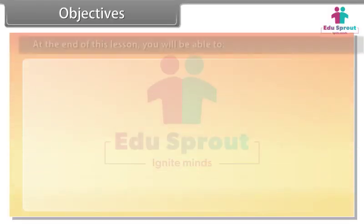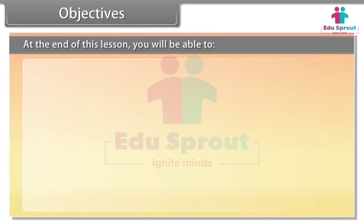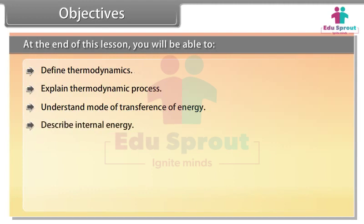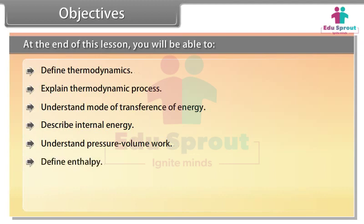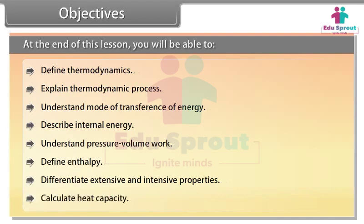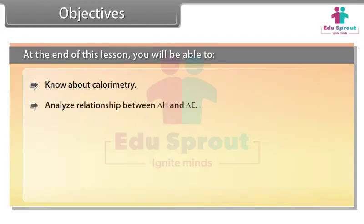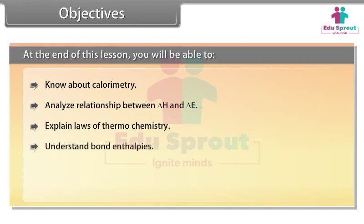Objectives. At the end of this lesson, you will be able to: define thermodynamics, explain thermodynamic process, understand mode of transference of energy, describe internal energy, understand pressure-volume work, define enthalpy, differentiate extensive and intensive properties, calculate heat capacity, know about calorimetry, analyze relationship between ΔH and ΔE, explain laws of thermochemistry, understand bond enthalpies, define spontaneous process, and calculate Gibbs energy.